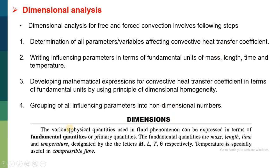The various physical quantities used in the fluid phenomenon can be expressed in terms of fundamental quantities, also called primary quantities. As in this chapter we are dealing with convection and fluid motion is an important factor, the fundamental quantities are mass, length, time, and temperature — represented by m, l, t, and theta. Don't confuse T with temperature; here T is for time and theta is used for temperature. Temperature is specially used in case of compressible flow.